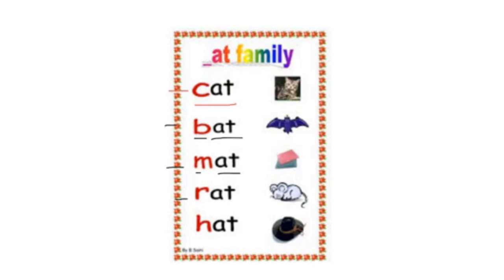Fourth one: R, at, rat. And the last one: H, at, hat. So we have cat, bat, mat, rat, hat. Did you hear the at sound at the end? Well done.